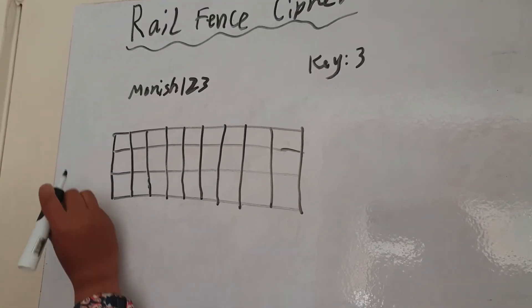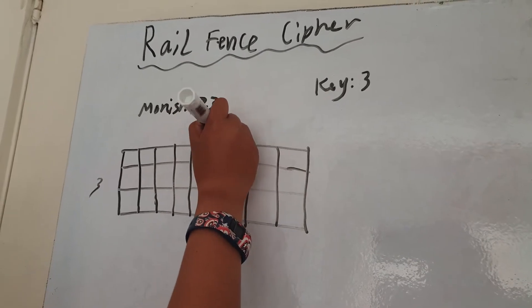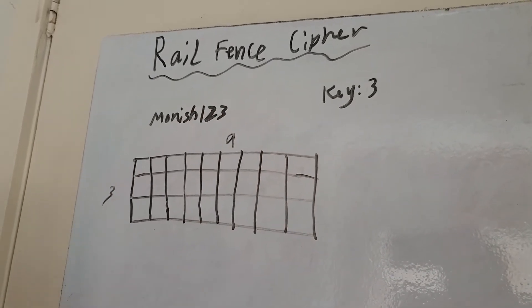So now that you've gotten it, so there's three here which is the key, and there's nine here which is that.